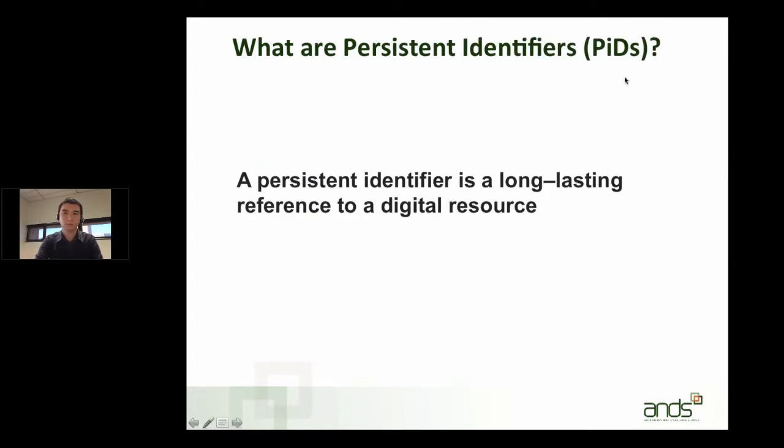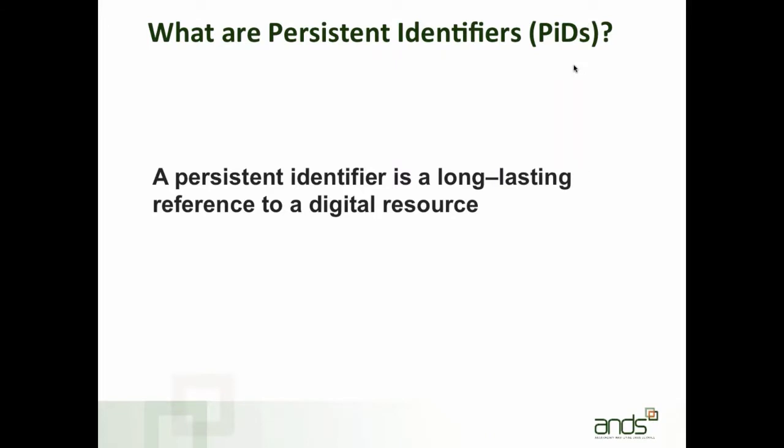A persistent identifier is simply a long-lasting reference to a digital resource. Even if the resource moves location on the web, the persistent identifier ensures the link always resolves. If a PID is used as a citation link in scholarly literature, it will always resolve to information about the resource - either a descriptive metadata page, the resource itself, or information about the removal of the resource from the web. PIDs are key to facilitating the discovery of scholarly resources and play a key role in linking scholarly resources, for example publications and data, as well as tracking their impact.